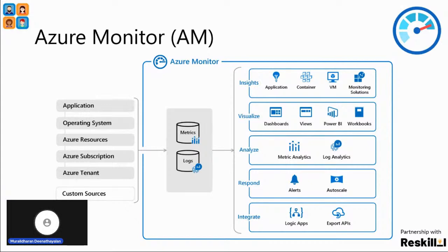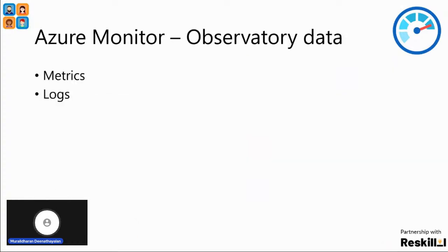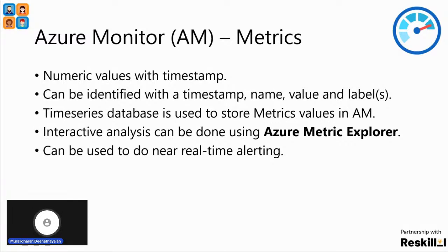When you look at Azure Monitoring Services, data can be stored in two different formats: either metrics or logs. Metrics store numeric values with a data timestamp — it's a time-based value. We can use it for a time series database to get all values, and all data can be analyzed using the Azure Metric Explorer. We can also set up a near real-time alerting system if there are any events or failures in the system.